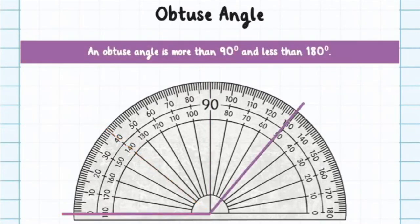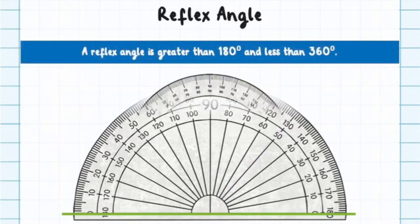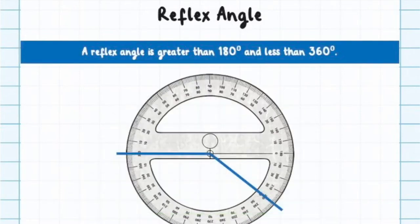An obtuse angle is more than 90 degrees and less than 180 degrees. A straight angle is exactly 180 degrees. A reflex angle is greater than 180 degrees and less than 360 degrees.